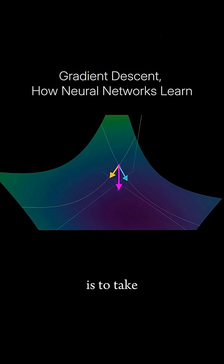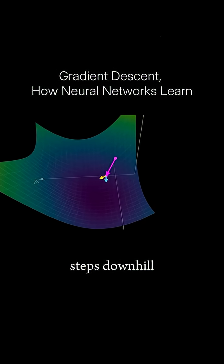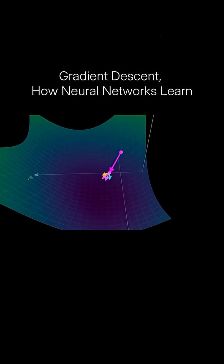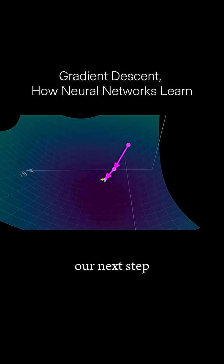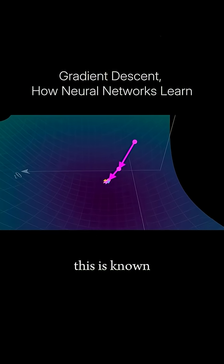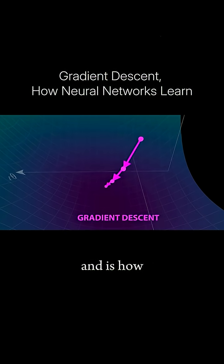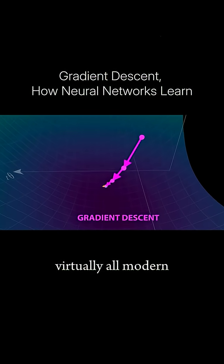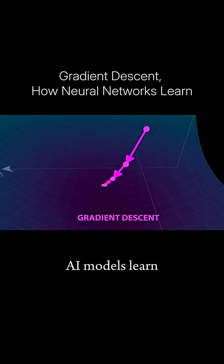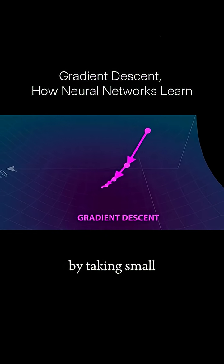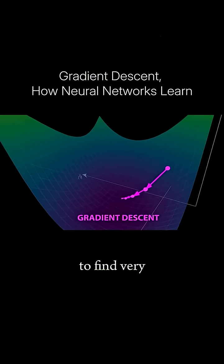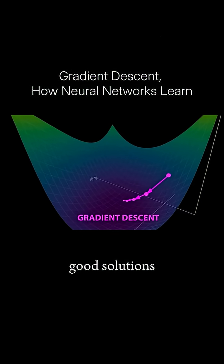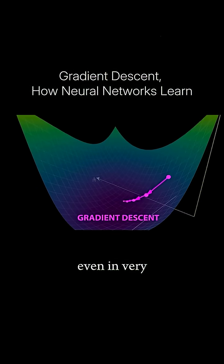The idea now is to take small iterative steps downhill, where after each step we recompute the gradient to guide our next step. This is known as gradient descent, and is how virtually all modern AI models learn. By taking small steps downhill, in practice we're often able to find very good solutions, even in very high dimensional loss landscapes.